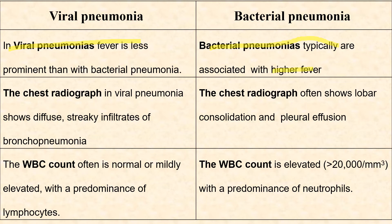In the chest radiograph of viral pneumonia, it shows diffuse streaky infiltrates of bronchopneumonia, whereas in the chest radiograph of bacterial pneumonia it shows lower lobe consolidation and pleural effusion.